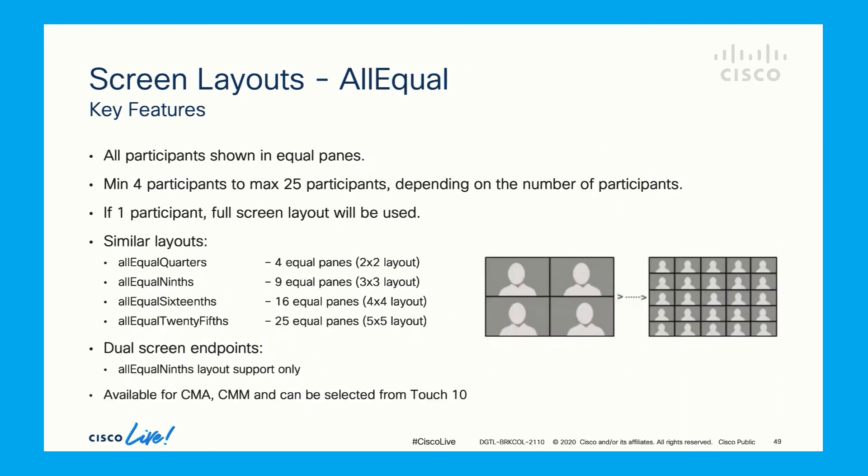This is the equal layout. Based on the number of participants, the number of endpoints shown can vary from 4 to 25. The layout switches between 2 by 2, 3 by 3, 4 by 4, and 5 by 5 to suit the number of participants. This layout can be selected from CMA, CMM, and Touch10.